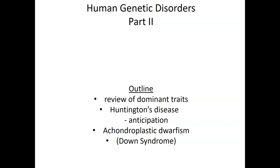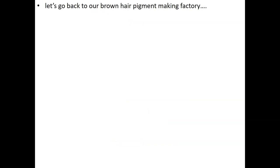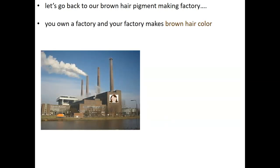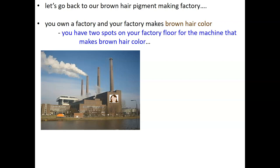Now, technically Down syndrome isn't a genetically dominant disorder, but it is due to one aberrant chromosome, so this is the best lecture for it to be discussed. Before we go into any of those diseases, let's go all the way back to our brown hair pigment-making factory that we introduced at the beginning of the last lecture. You own a factory and your factory makes brown hair color.